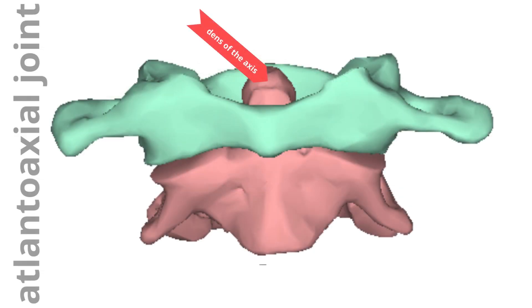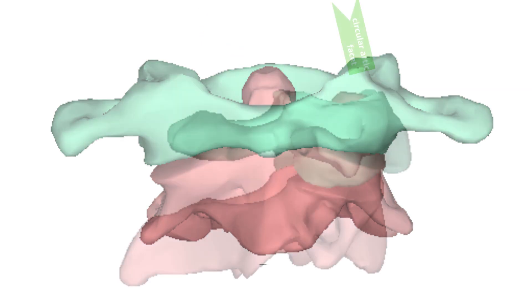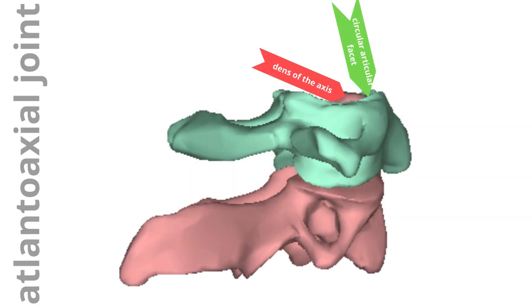This is a synovial pivot joint that facilitates rotational movements of the head on the neck, such as shaking the head or turning the head from left to right.